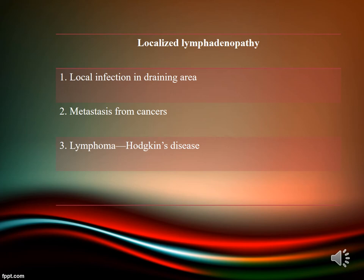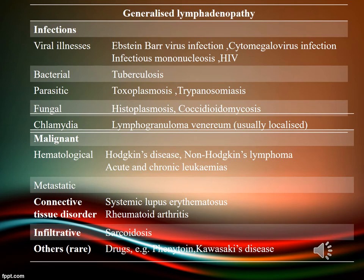Usual causes of localized lymphadenopathy are local infection in the draining area, metastasis from cancers, and lymphomas such as Hodgkin's disease. Generalized lymphadenopathy can be due to infections — viral illnesses like Epstein-Barr virus, cytomegalovirus, HIV; bacterial infections like tuberculosis; parasitic, fungal, and chlamydia infections — or hematological malignancies like Hodgkin's, non-Hodgkin's lymphoma, acute and chronic leukemias, metastatic and infiltrative conditions like sarcoidosis, drugs like phenytoin, and Kawasaki's disease.